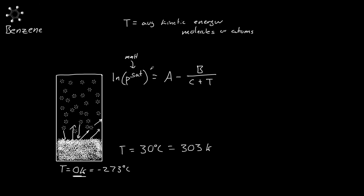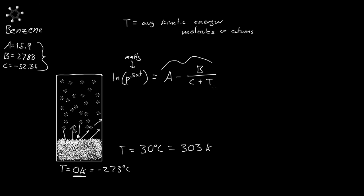For benzene, A is 15.9 (no units), B is 2788, and C is negative 52.36. If we plug this data in and pick some temperature, we can find the saturated pressure — or if this system is set at some temperature, we can find the pressure inside.